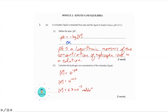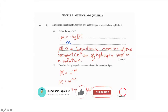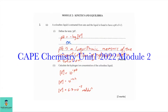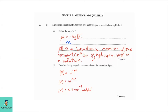Welcome to Chem Exam Explained, where the aim is chemistry clarity and exam mastery. In today's video we will be looking at CAPE Chemistry Unit 1, 2022, Module 2: Kinetics and Equilibria.